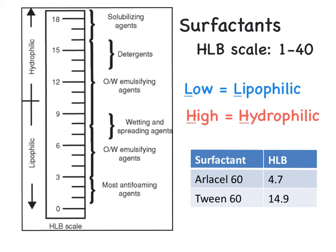If we look at these two examples of surfactants, the Arlacel 60 and the Tween 60, the Arlacel 60 with the HLB of 4.7 would be the more lipophilic surfactant, while the Tween 60 with an HLB of 14.9 would be the more hydrophilic surfactant.